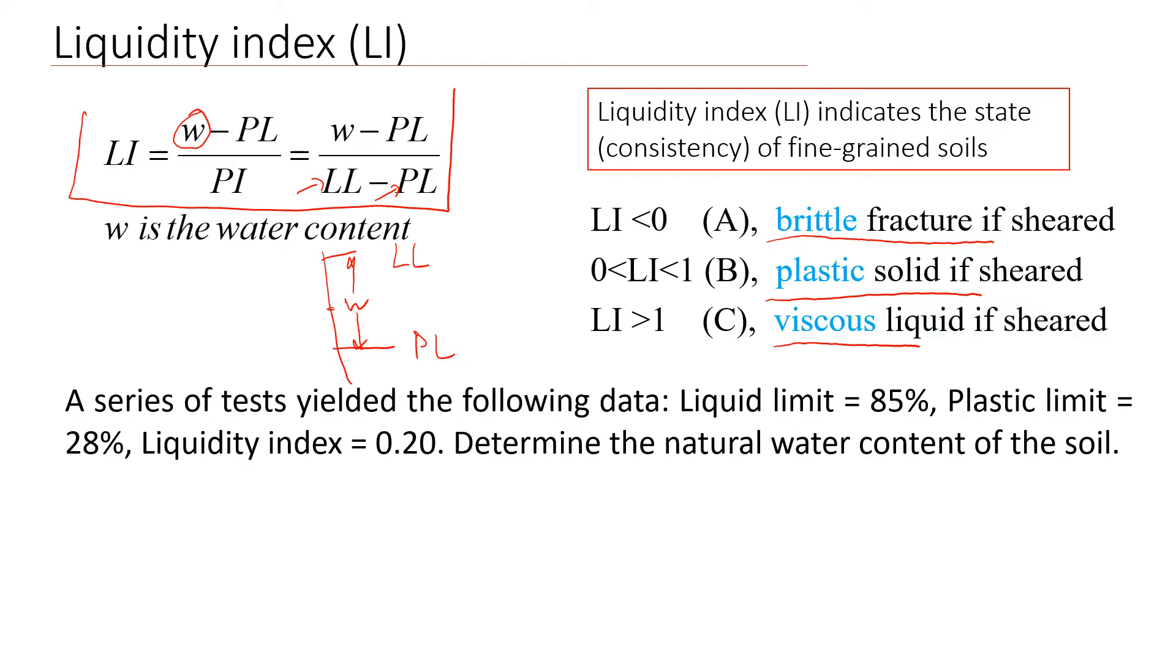So usually what we do in the field, we just collect soil samples from the field, and we can measure natural water content of that soil in situ. Then we can conduct Atterberg limits test to get a liquid limit and plastic limit. And then we just put it in the formula to estimate liquidity index. And then we're going to look what number we have to classify the soil.